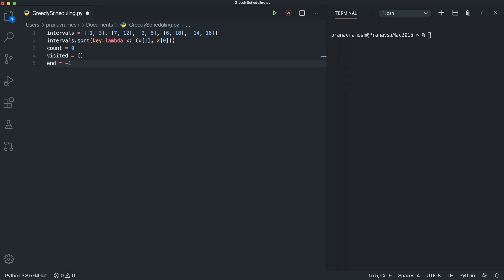So every time we visit a new interval, we'll check to see if we're still in an event right now. And if we're not in an event, we will update end. So that's actually the next part.